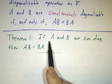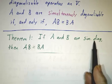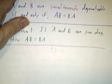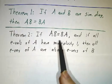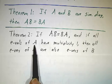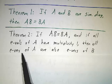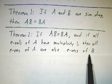In this video, we'll show that if they're simultaneously diagonalizable, then they have to commute. We'll also show that if they commute and if all the eigenvalues of A have multiplicity 1, then the eigenvectors of A are also eigenvectors of B and we're done.